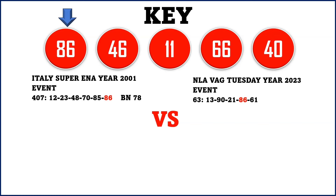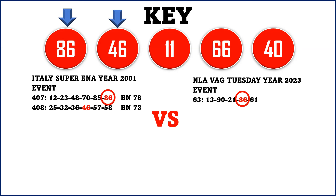For the lotto, results numbers up to 16 are given plus a bonus number — both the winning numbers and bonus numbers are crucial for this study. The next sequence number is 46. For Super Enalotto results number 408, we have 25, 32, 36, 46, 57, and 58 with BN 73. For the NLA lotto results 64, the numbers drawn were 9, 20, 50, 46, and 75. Both events produced 46 and 46.